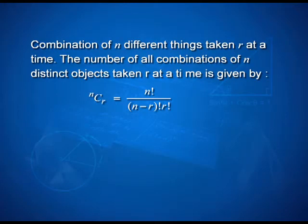There is a simple result which says that the number of all combinations of n distinct objects taking r at a time is given by and denoted by nCr, with the value n factorial divided by n minus r factorial into r factorial.